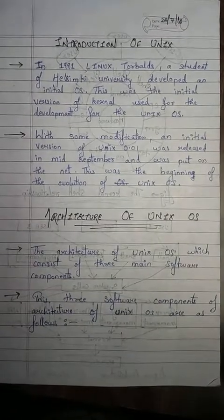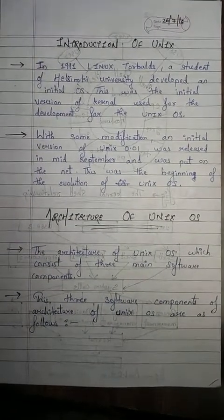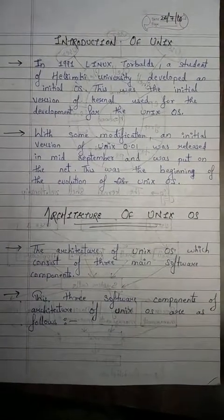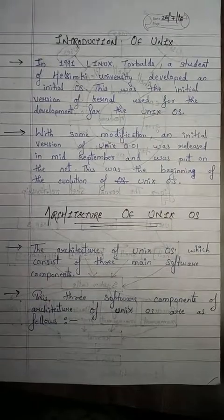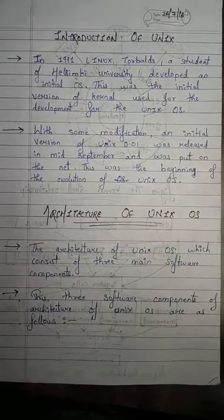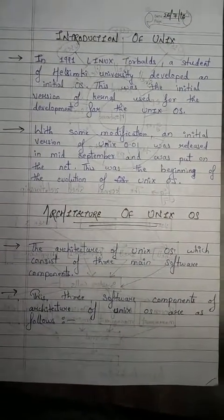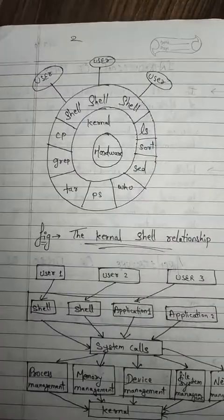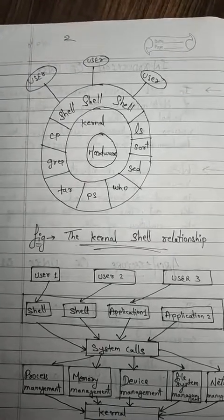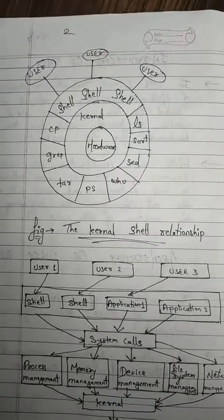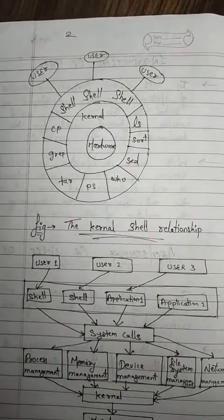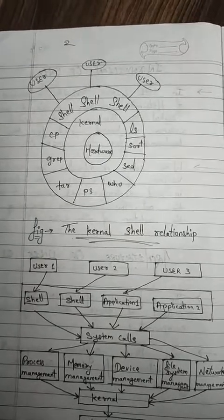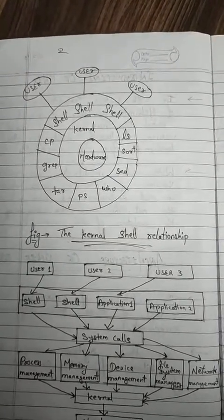The architecture of the Unix operating system consists of three main software components. These three main components are: hardware, kernel, shell, and user.